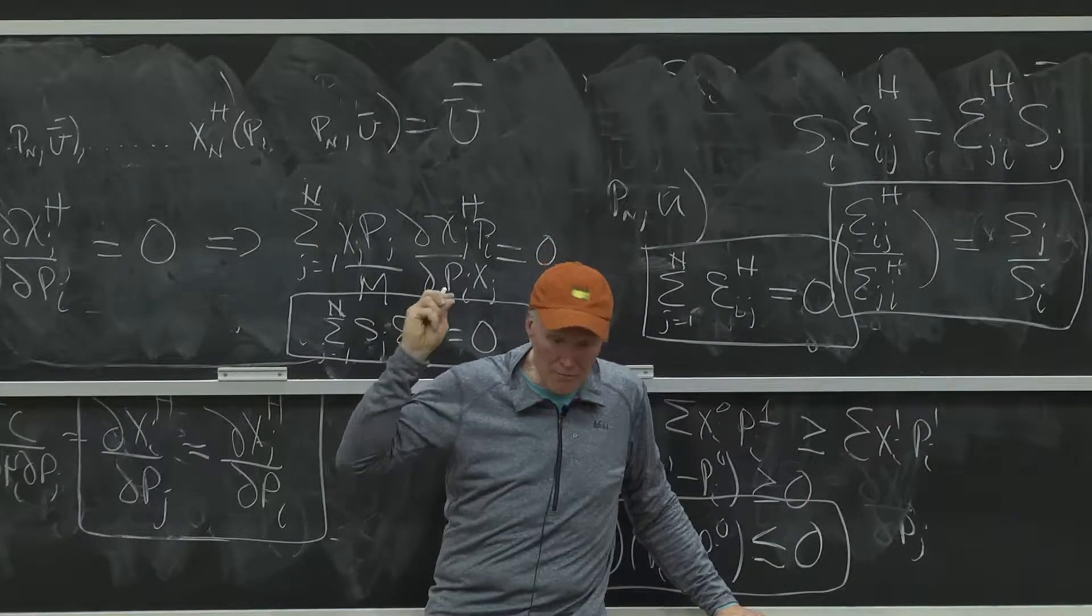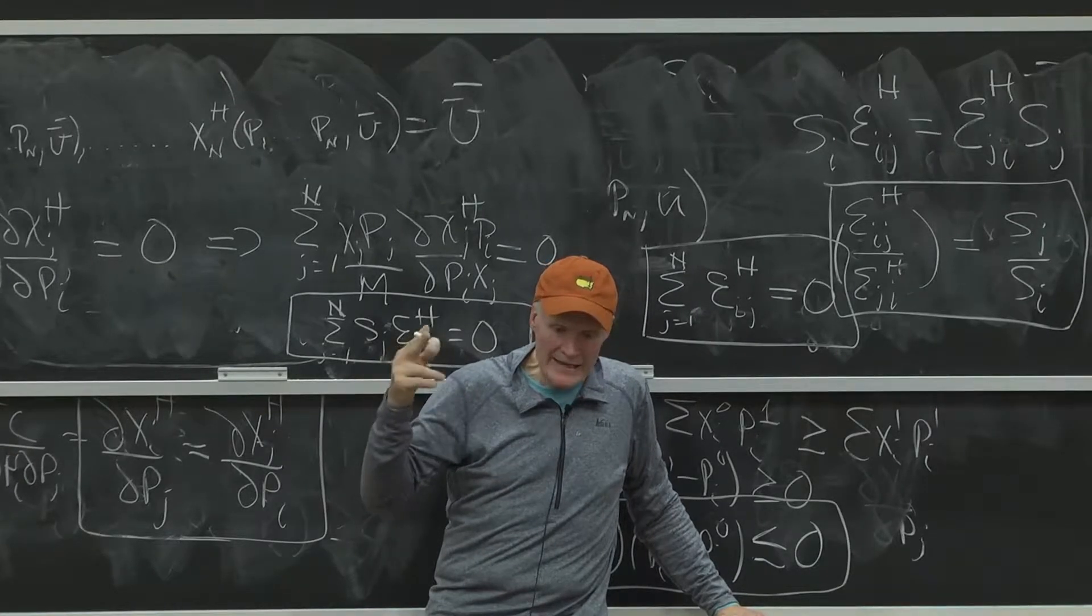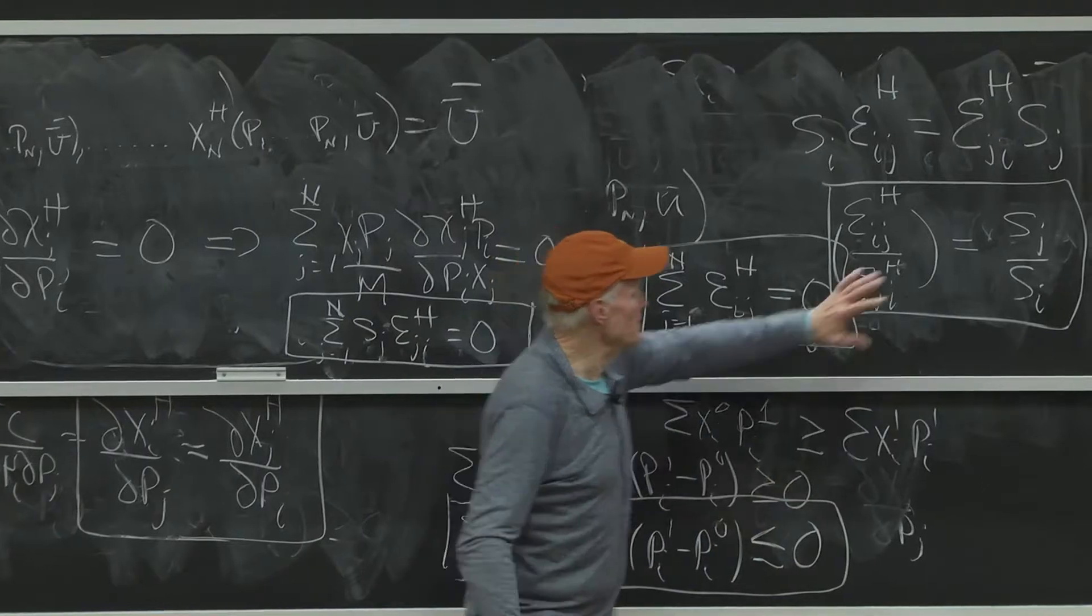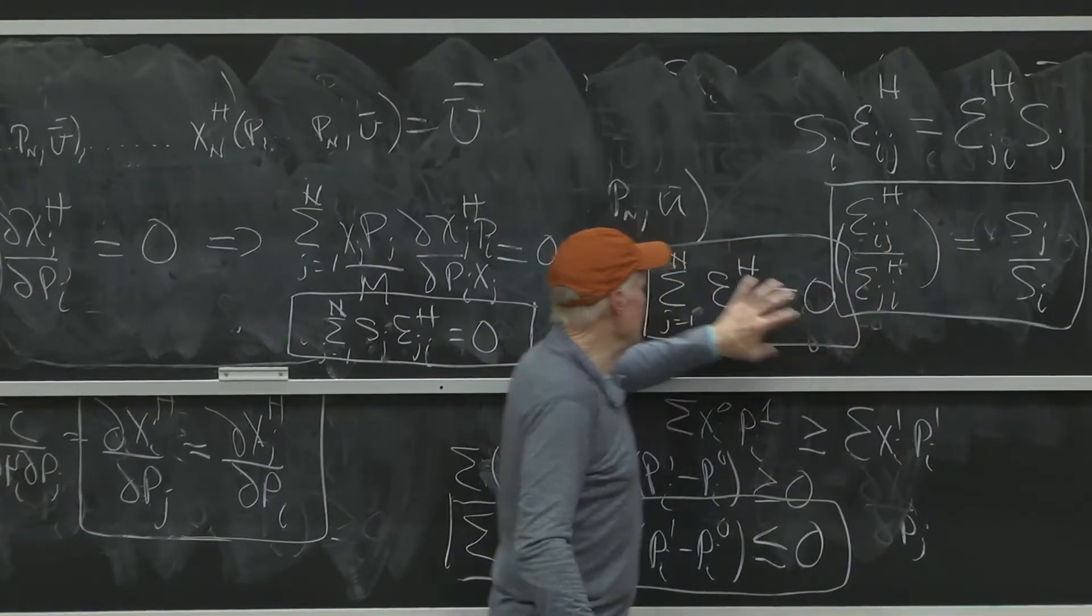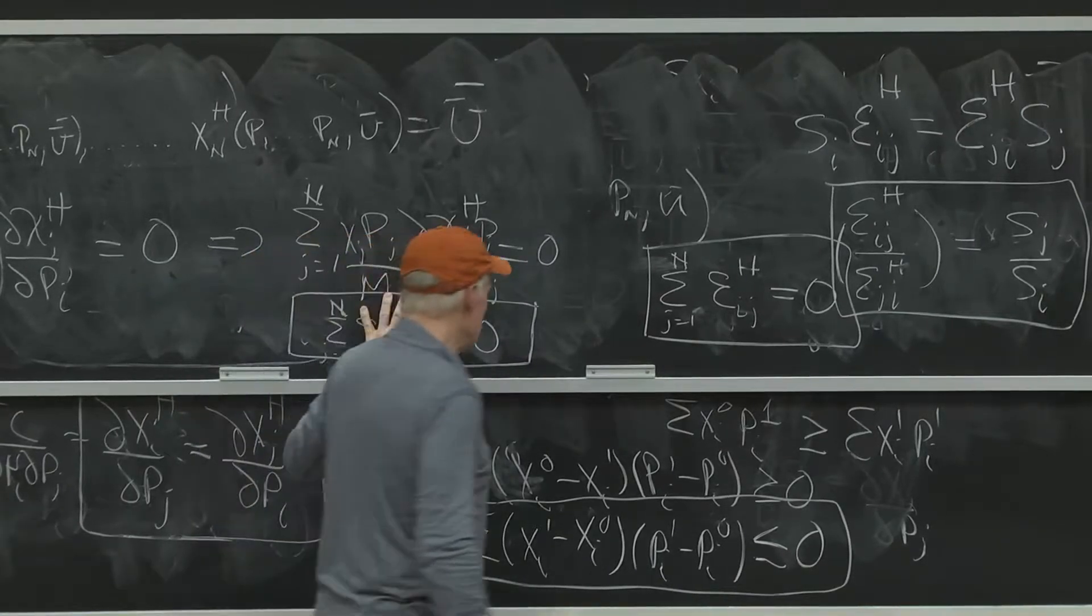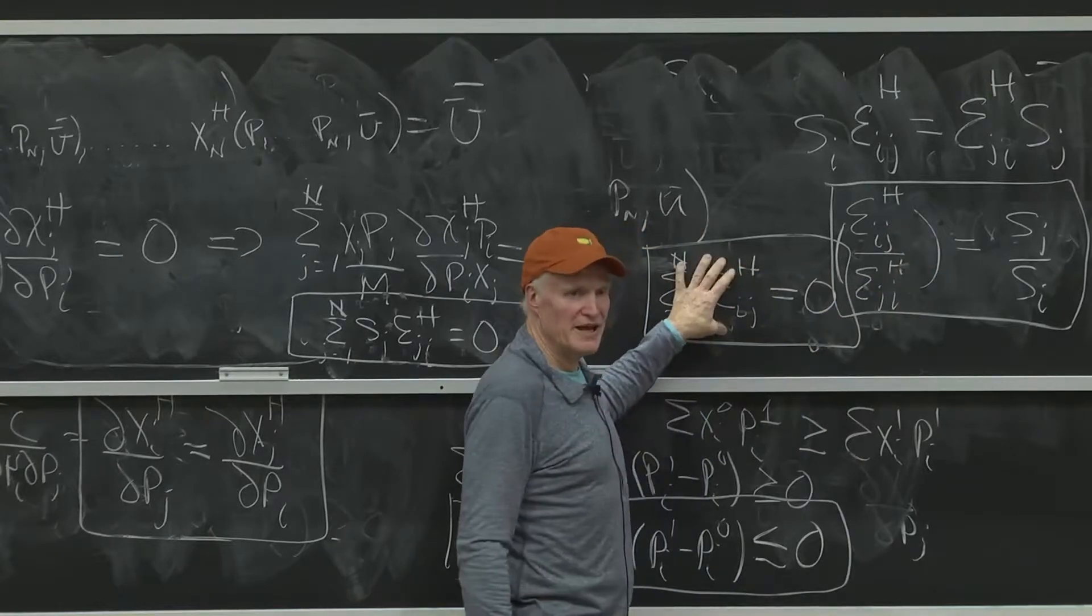So when I'm trying to impose restrictions on my demand system, I need to impose only two of these three things. If I impose symmetry and homogeneity, I get adding up for free. If I impose adding up and symmetry, I get homogeneity for free.